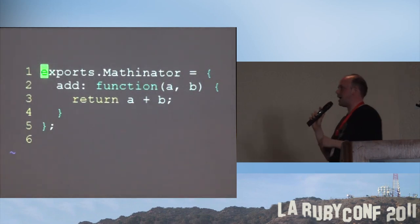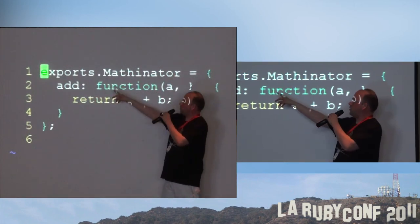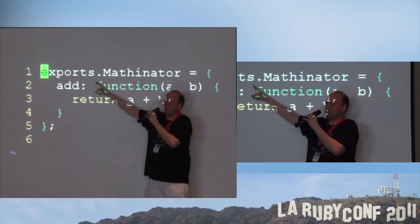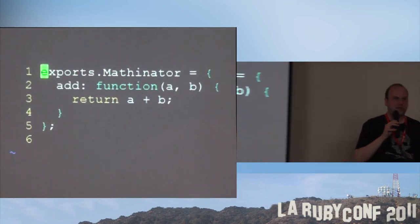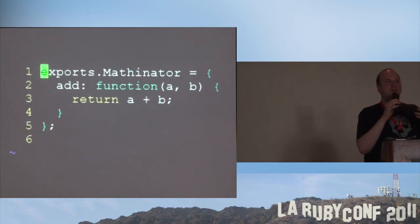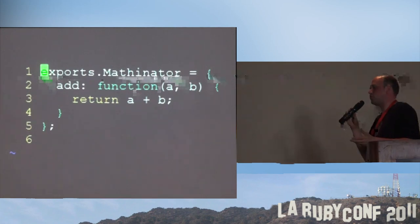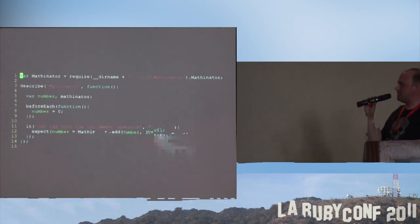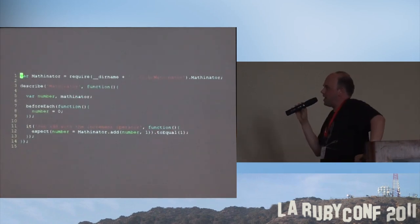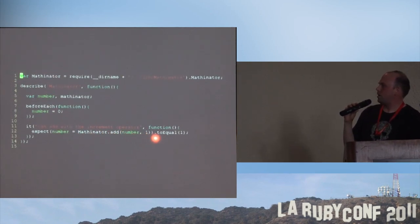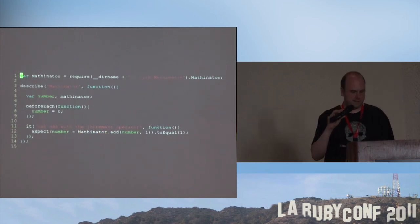Here's an example of actually doing that. This is key to how you use require with Node.js — its whole packaging system. All you do is add objects to an existing exports object. Exports might as well be called namespaces, because it provides a fully object-oriented namespace in the JavaScript sense. This here creates a mathinator with a function called add which returns a plus b. And this is a spec for the mathinator — it does a beforeEach where it sets number equal to zero, then says expect number equals mathinator add number one to equal one. So you add zero to one, you expect that to equal one, and this spec passes.